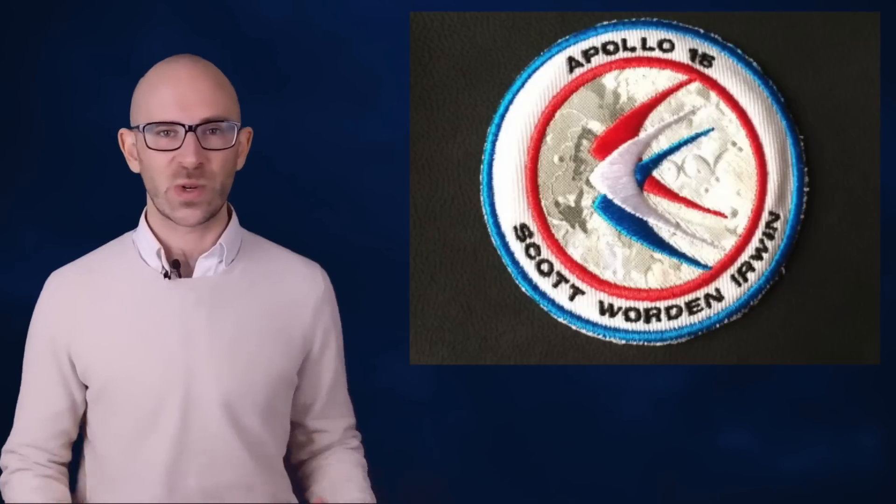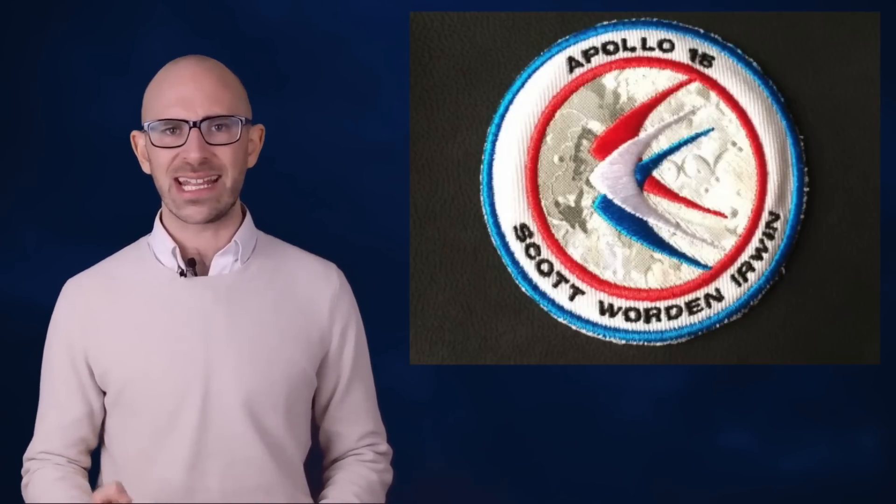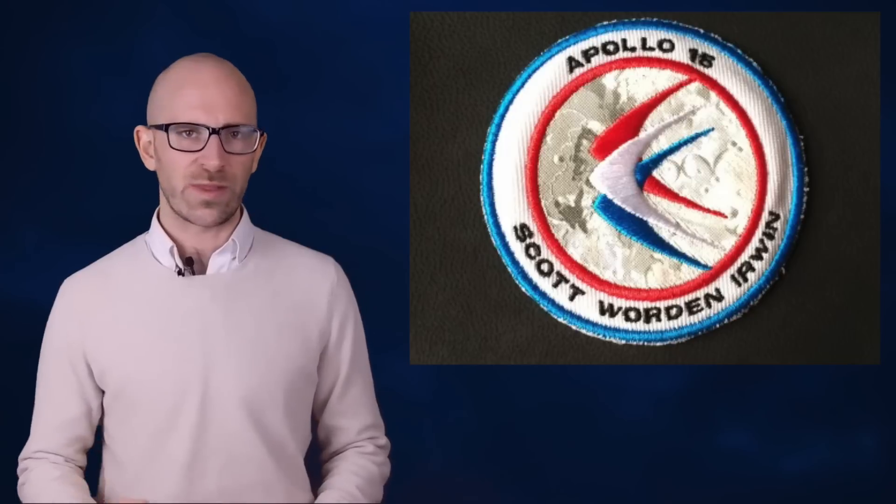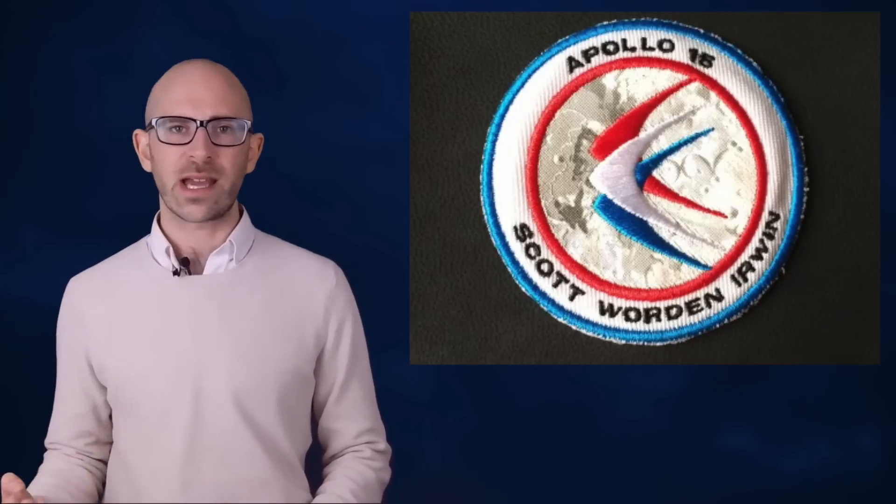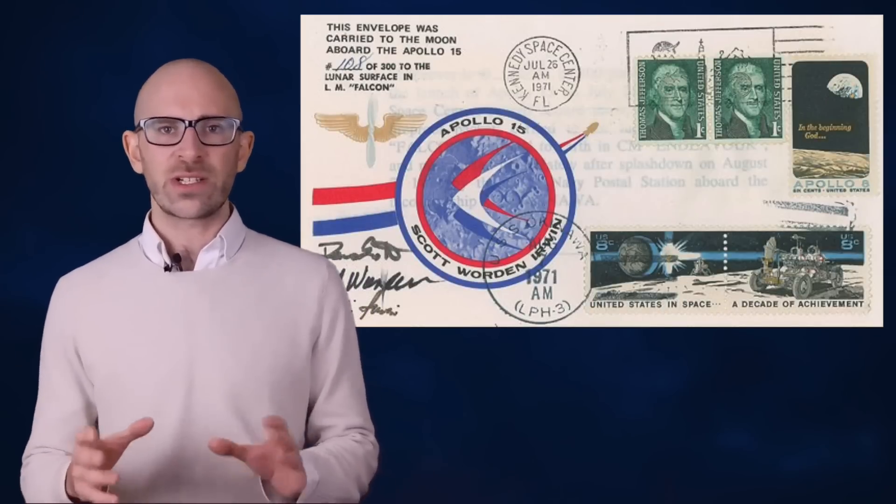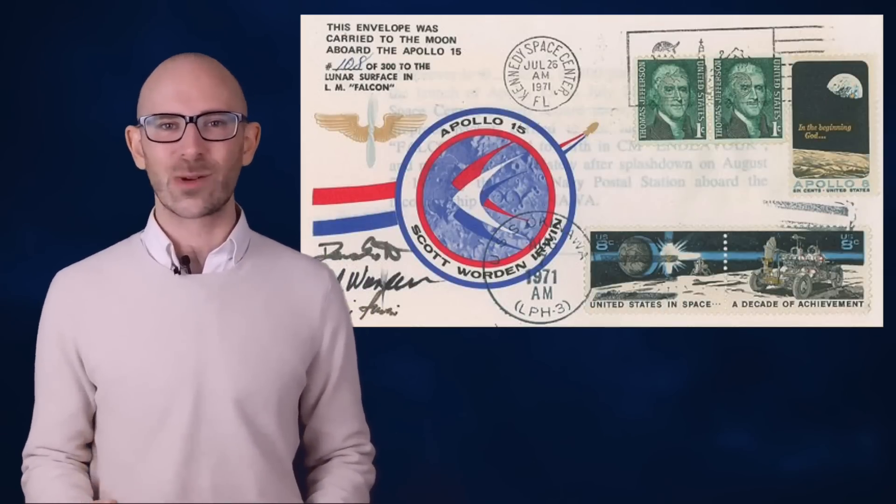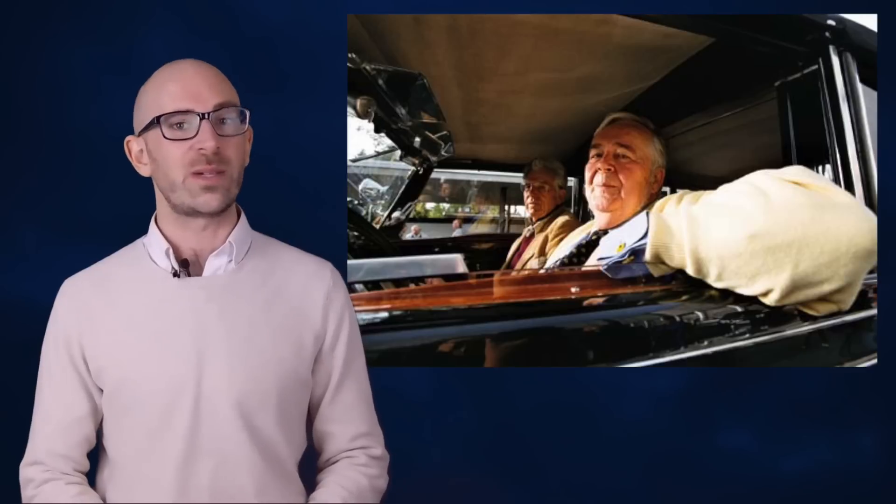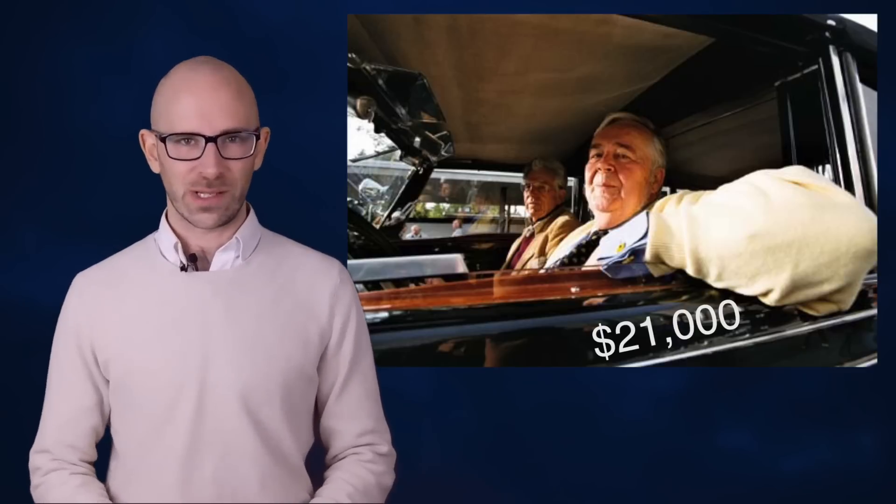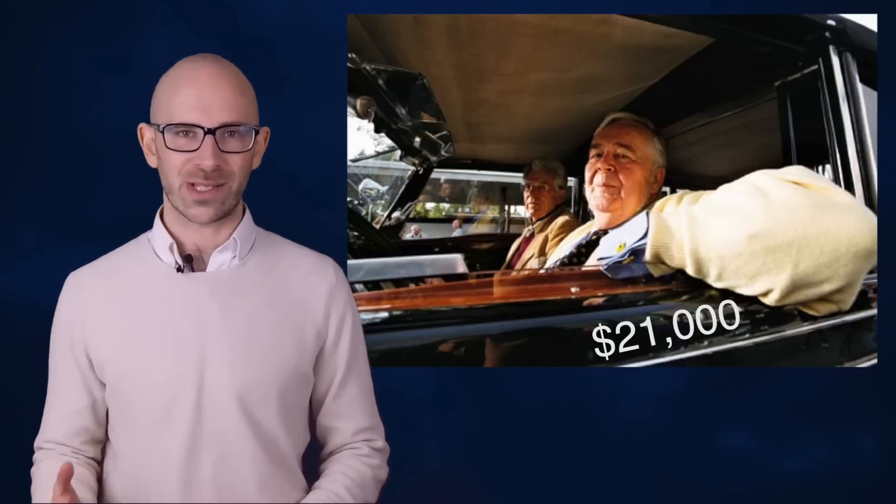Mainly because of the infamous Apollo 15 stamp scandal, in which the astronauts took this idea a bit further and smuggled aboard 398 unauthorized covers to go along with the 243 authorized covers NASA had sent up in partnership with the U.S. Postal Service, which they took to the moon and back. One hundred of the 398 unauthorized covers was sold to stamp dealer Herman Seager for a total of $21,000—$7,000 for each astronaut, or about $40,000 each today.